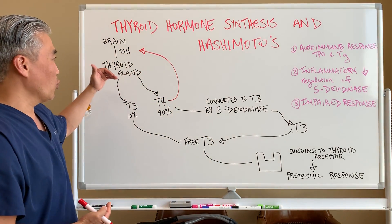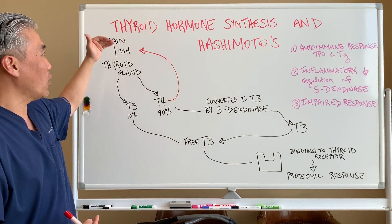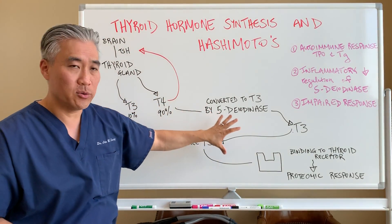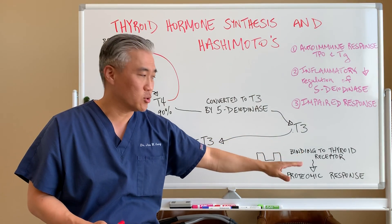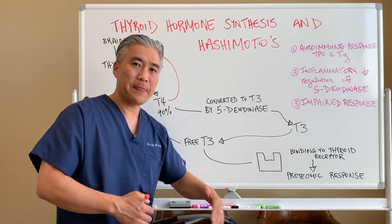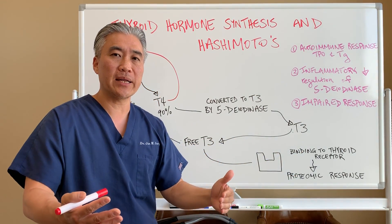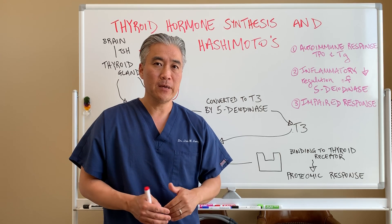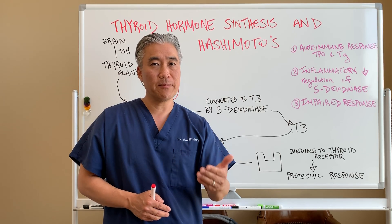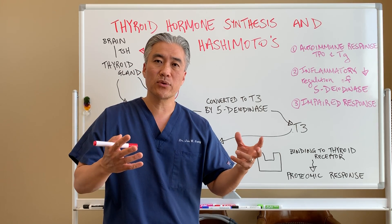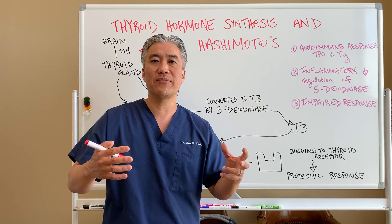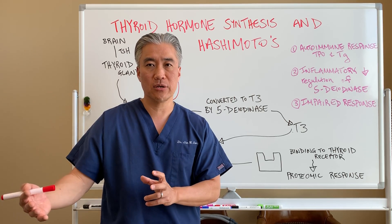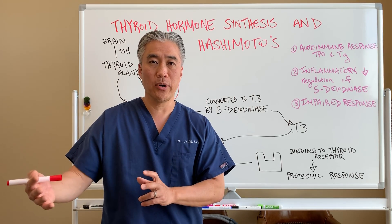So where can it go wrong? When we have this cascade of hormones going down to the receptor site — every cell in the body has a receptor for thyroid hormone. The receptor site is very important for receiving the hormones and having an actual metabolic, physiological response.